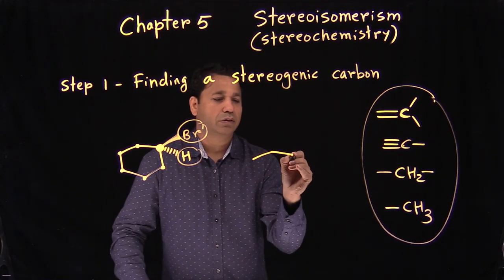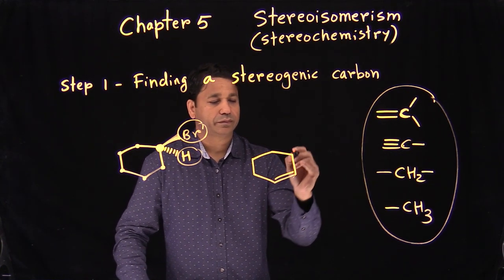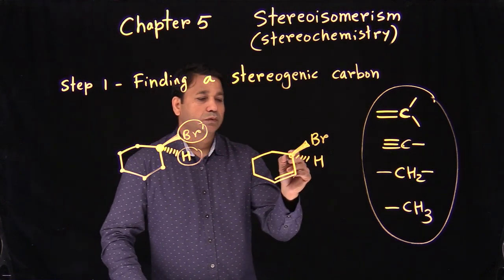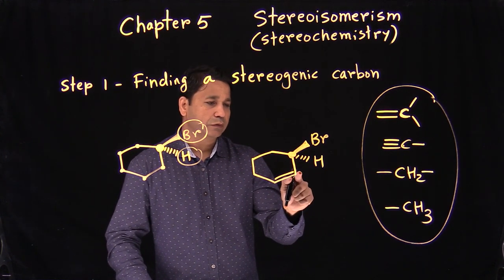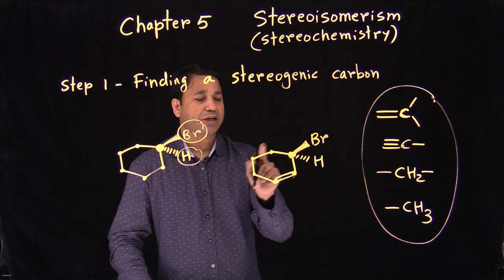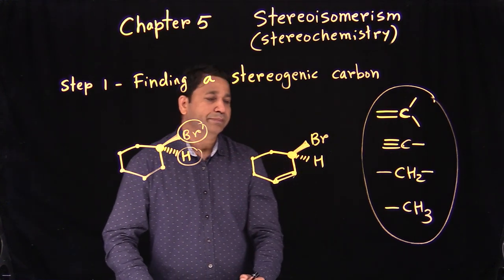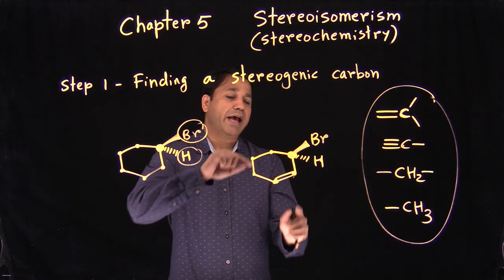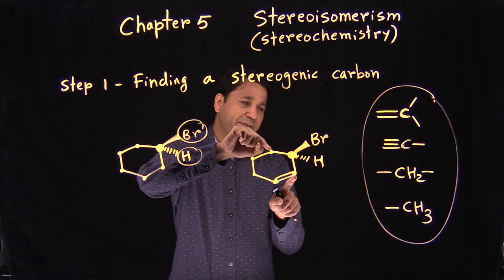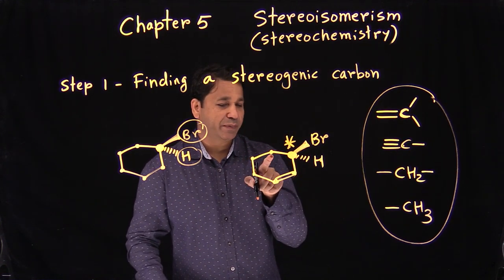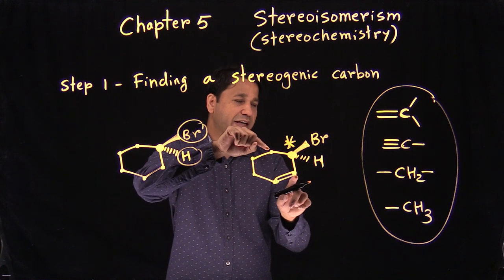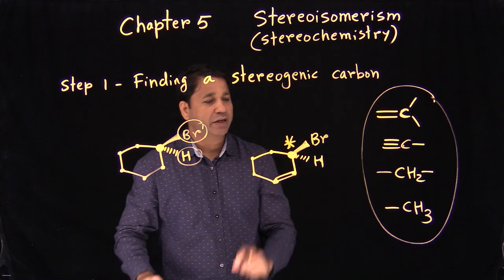Now let's add a double bond to the ring. We still have bromine on one carbon. Ignoring the CH2 carbons and the two SP2 carbons, we focus on the carbon bearing bromine. It has bromine and a hidden hydrogen — different groups. Comparing the two ring-path carbons at first point of contact: one side is SP3 (CH2), the other is SP2 (from the double bond) — they are not the same. Therefore this carbon IS stereogenic.